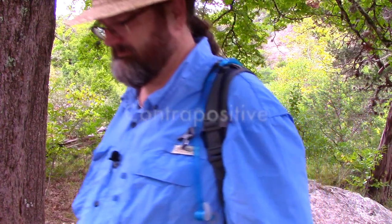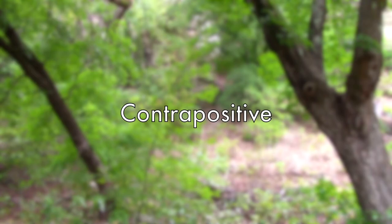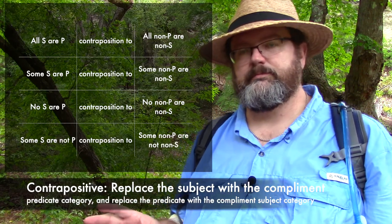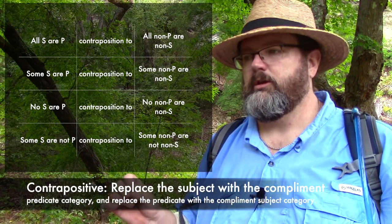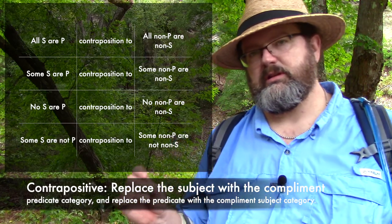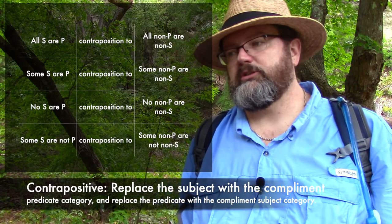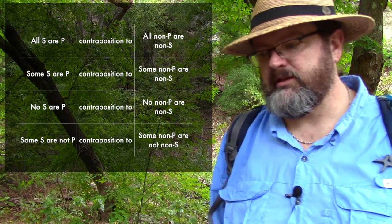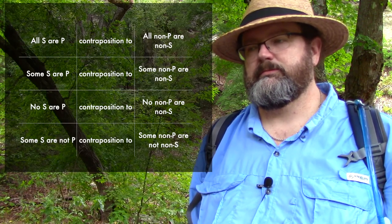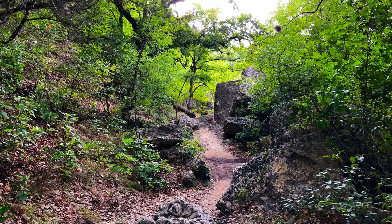The last operation is the contrapositive. For a contrapositive, you leave the quantifier alone and leave the copula alone. You replace the subject category with the complementary predicate category, and replace the predicate category with the complementary subject category. So 'All dogs are mammals' becomes 'All non-mammals are non-dogs.' Now let's check which categoricals are equivalent to their contrapositive.